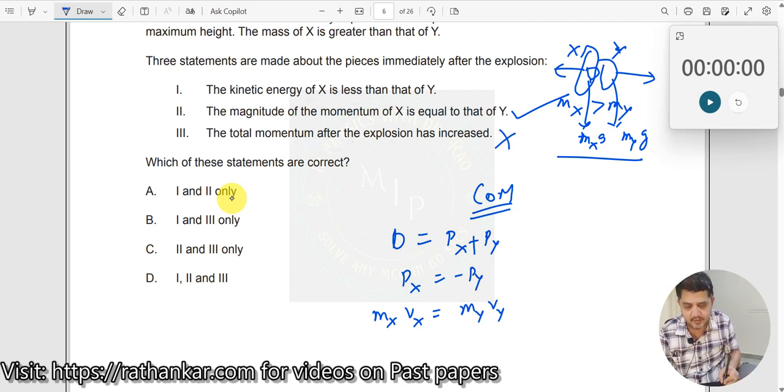Now, you need to look at this. What is the kinetic energy of X? It is half M V_X squared, which can be written as P_X squared divided by 2 M_X. Similarly, the kinetic energy of Y is half M V_Y squared, which can be written as P_Y squared divided by 2 M_Y. Now, since P_X equals P_Y, kinetic energy is inversely proportional to mass here.